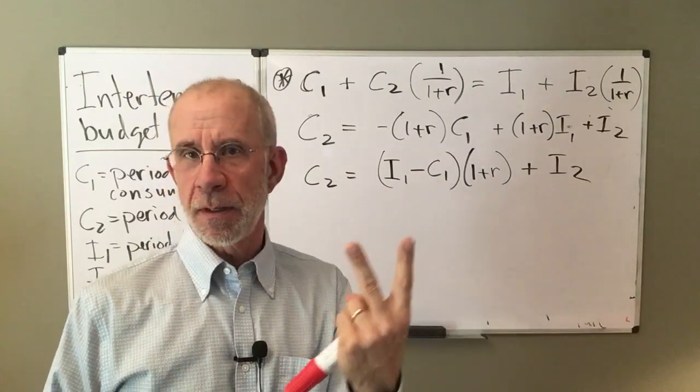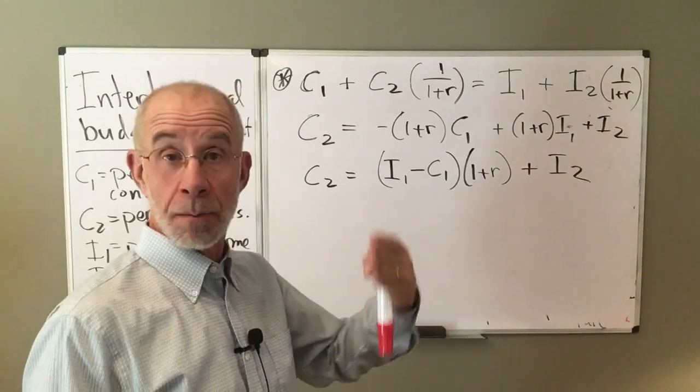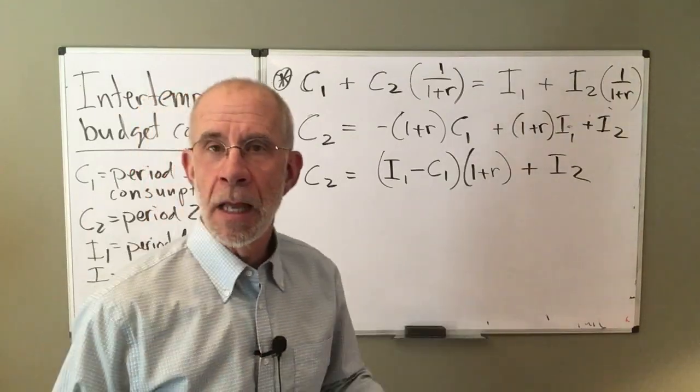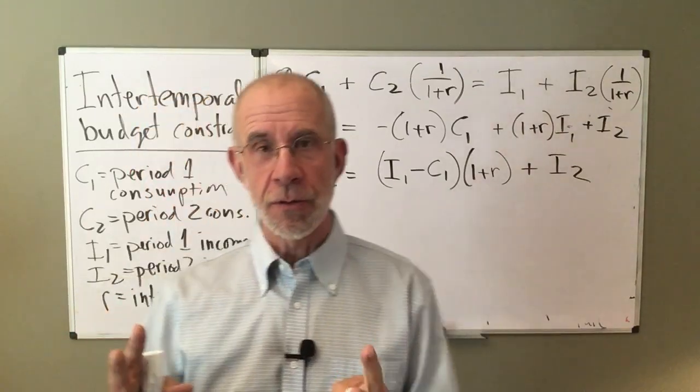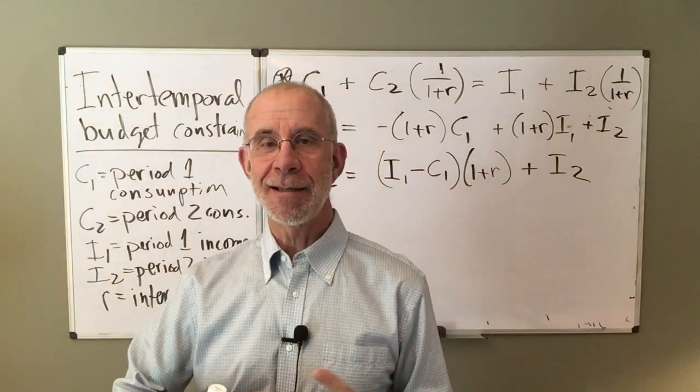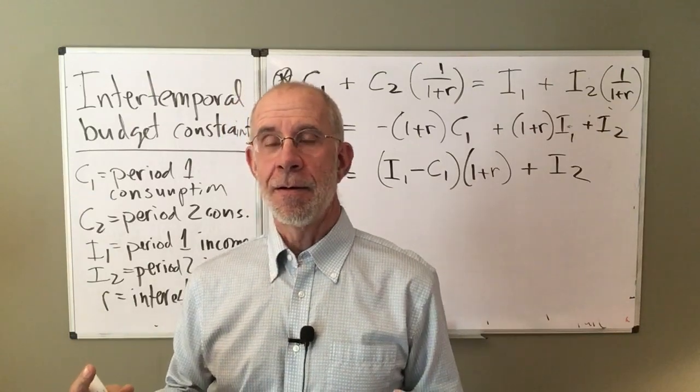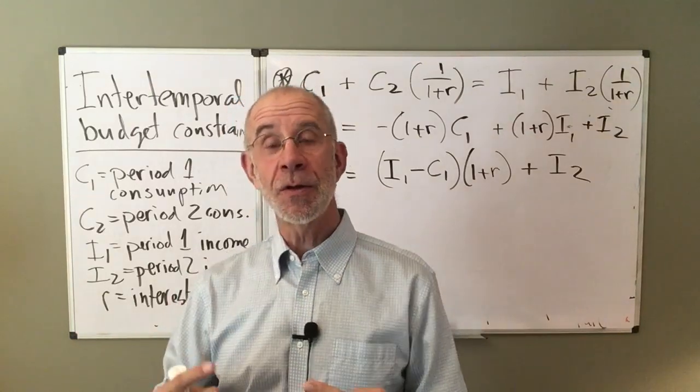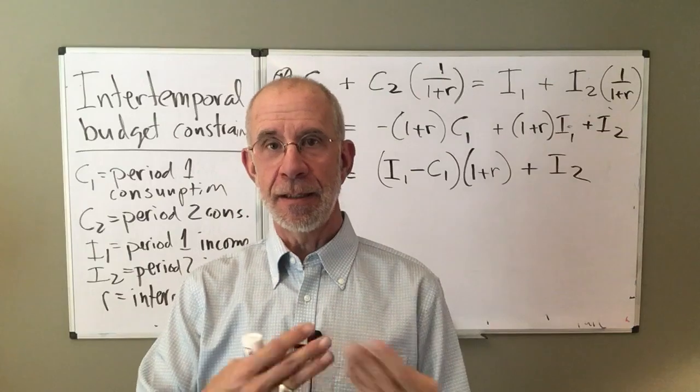We'll be doing this in a two period model to keep it simple. So in period one, in period two. And it's a budget constraint, so how much you consume depends at least in large part on your preferences, but also your income today and tomorrow.